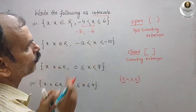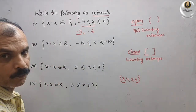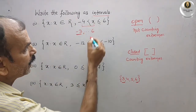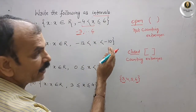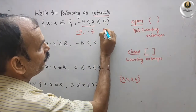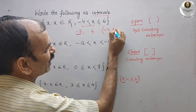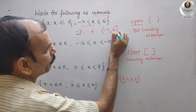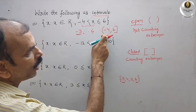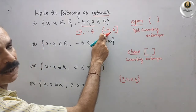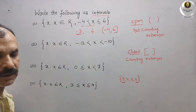We are not counting -4 (open end), but we are counting 6 (closed end). So we denote this as (-4, 6] — a small bracket on the left side since -4 is excluded, and a big bracket on the right side since 6 is included.